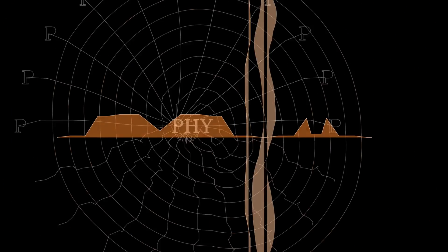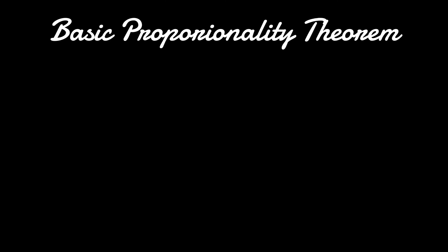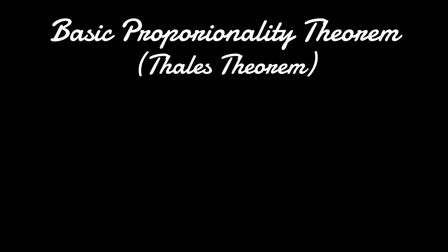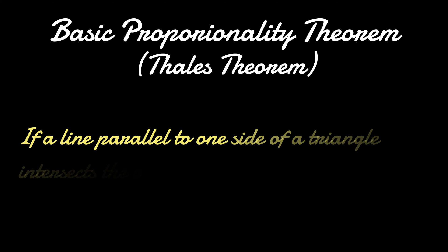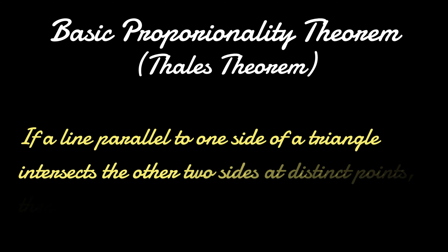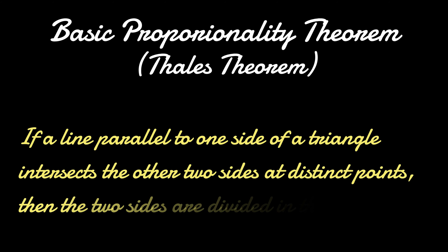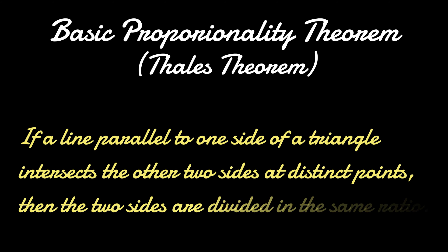In this video we will understand the proof of the most important theorem of class 10th, known as the Basic Proportionality Theorem. This theorem is also known as Thales' Theorem and states that if a line parallel to one side of a triangle intersects the other two sides at distinct points, then the two sides are divided in the same ratio.